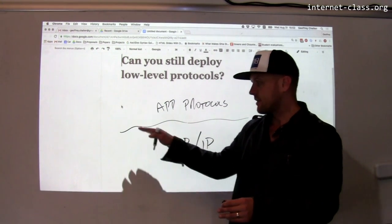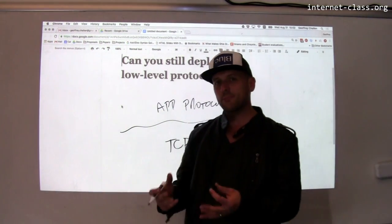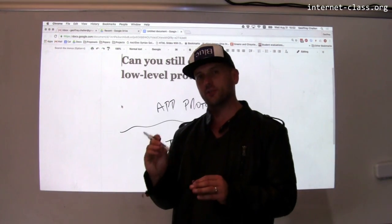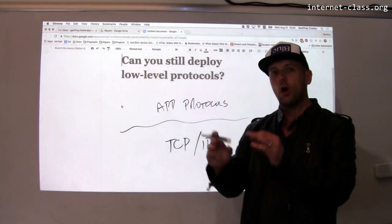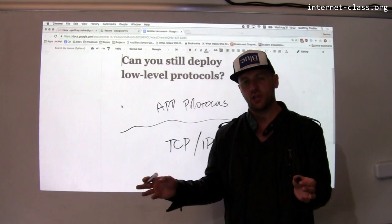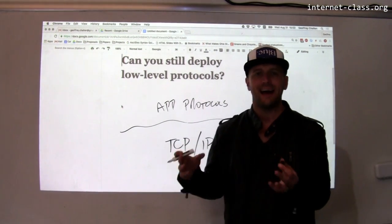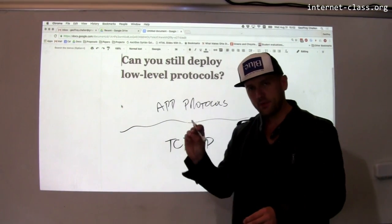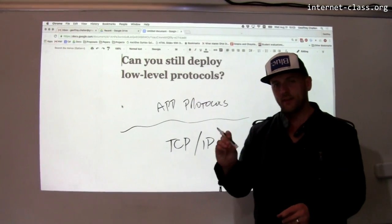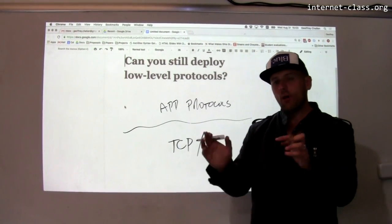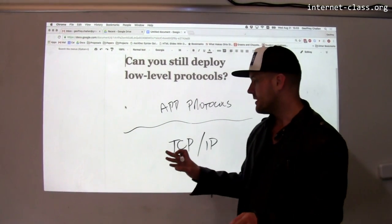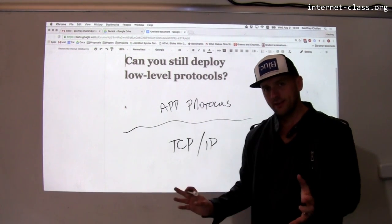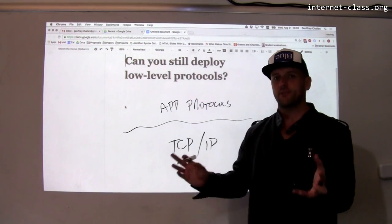The lower-level protocols are typically implemented in software on the device and are difficult to change. When you install a Windows, Mac, or Ubuntu machine, you get an implementation of TCP/IP that's maintained by whoever made the operating system. If you want to change that, you have to talk to them, and that's a very slow process.